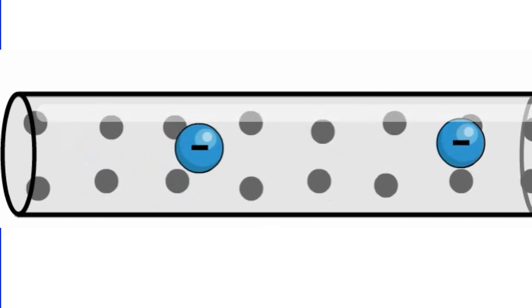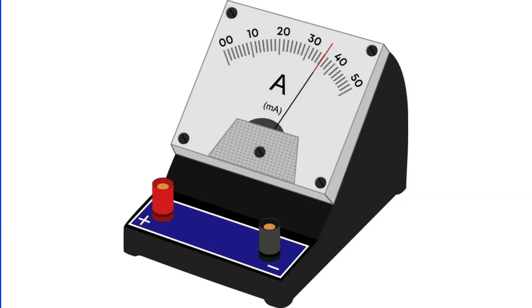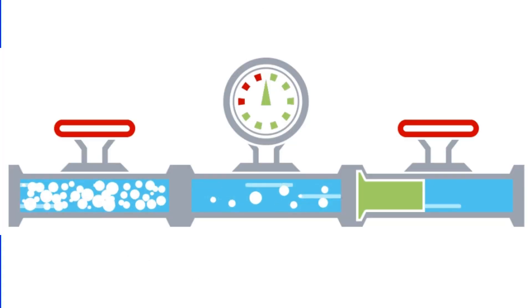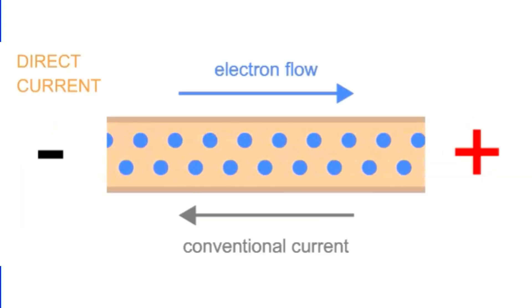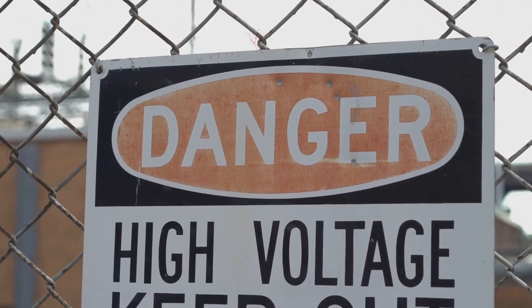On the flip side, we have current. Current, which is measured in amperes, is the actual movement of electrons through a conductor. To draw a parallel, it is akin to the flow of water in a pipe. As water flows through a pipe, electrons move through a conductor. It's this movement that we call current. It might seem less daunting than voltage at first glance, but it's just as critical in the grand scheme of things.